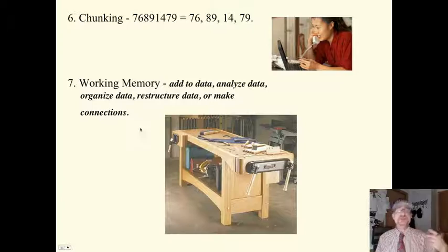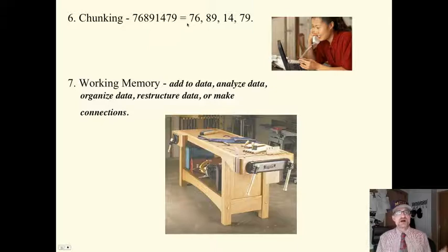I also use what's called chunking. Chunking is instead of remembering all these digits, I chunk them together. It's hard to remember all those numbers, but 76, 89, 14, 70 is much easier. By the way, when you are purchasing something on the telephone with a credit card, easy way to process quicker. Instead of saying 7, 2, 3, 8, say 72, 38, 42, 69. That's an example of chunking. It's much easier to remember little chunks of information rather than digits.